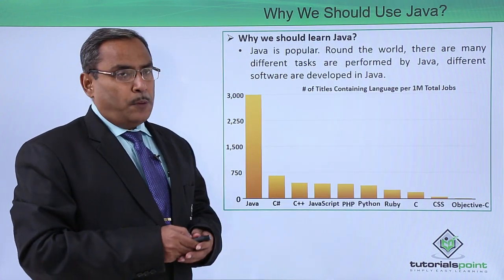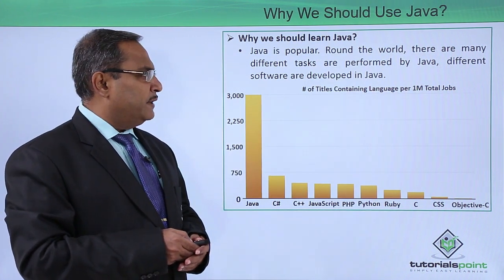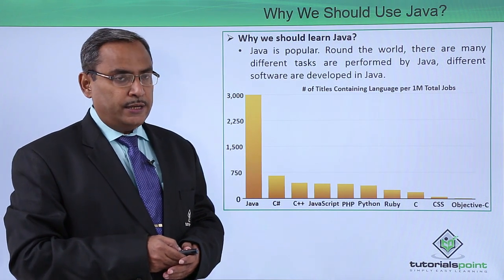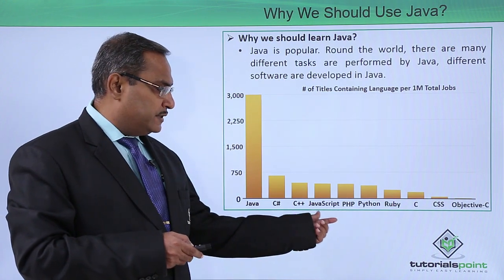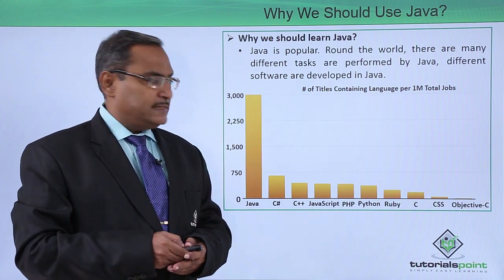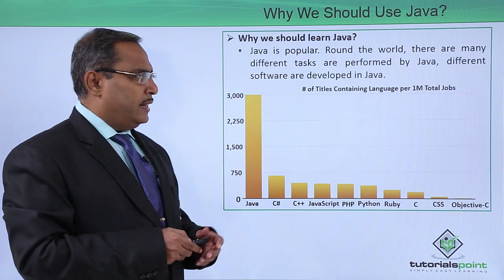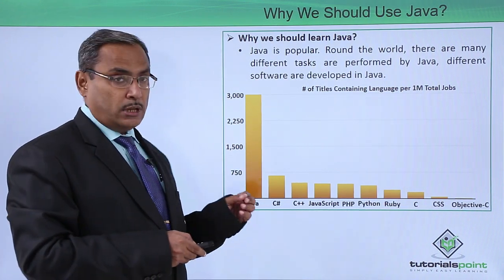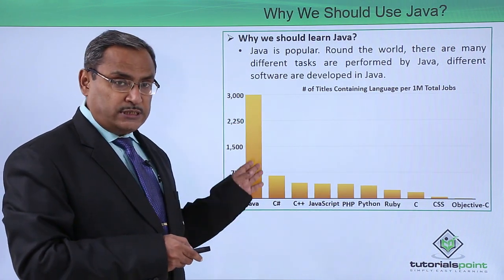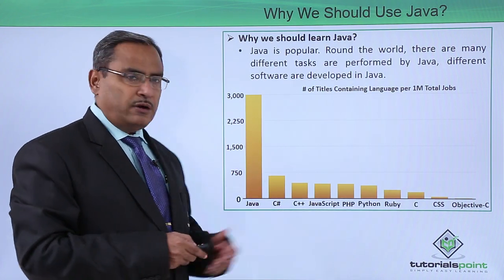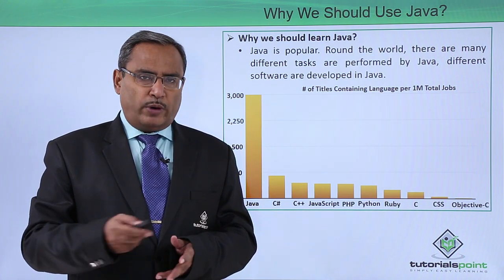Java is popular worldwide, and many different tasks and different software products are developed using Java. Here we have a comparative study showing Java, C#, C++, JavaScript, PHP, Python, Ruby, C, CSS, and Objective-C, comparing the number of job titles containing each language per one million total jobs. From this ratio, you can see that Java accounts for the lion's share of application development.